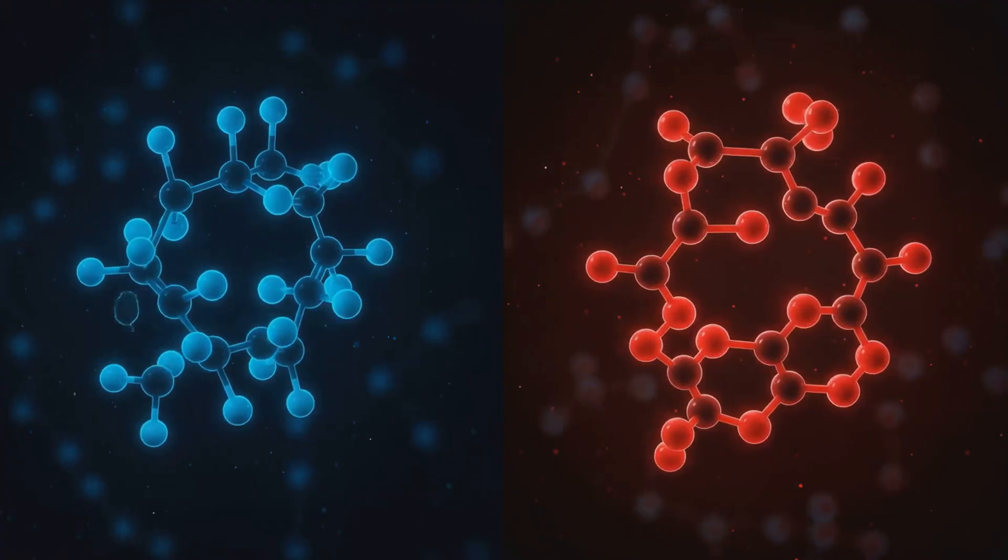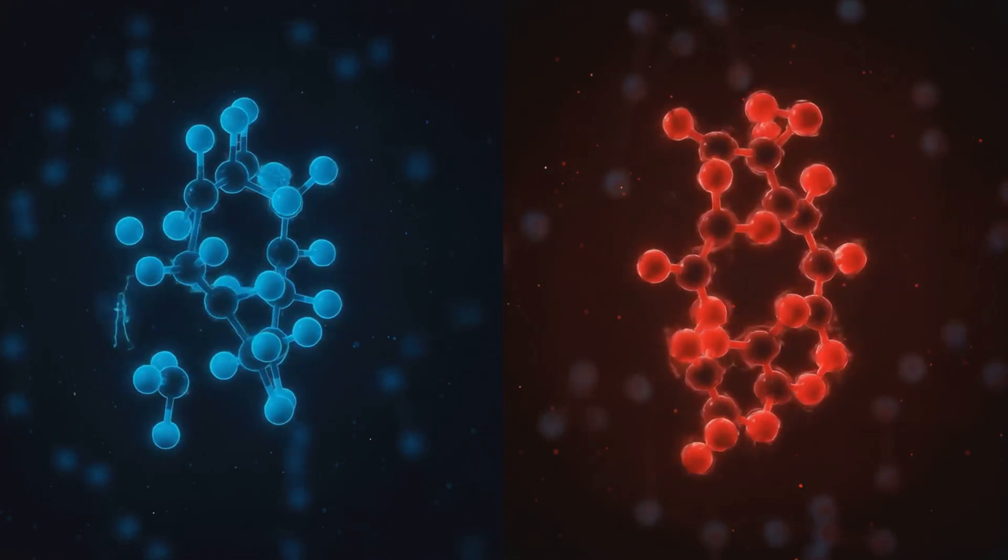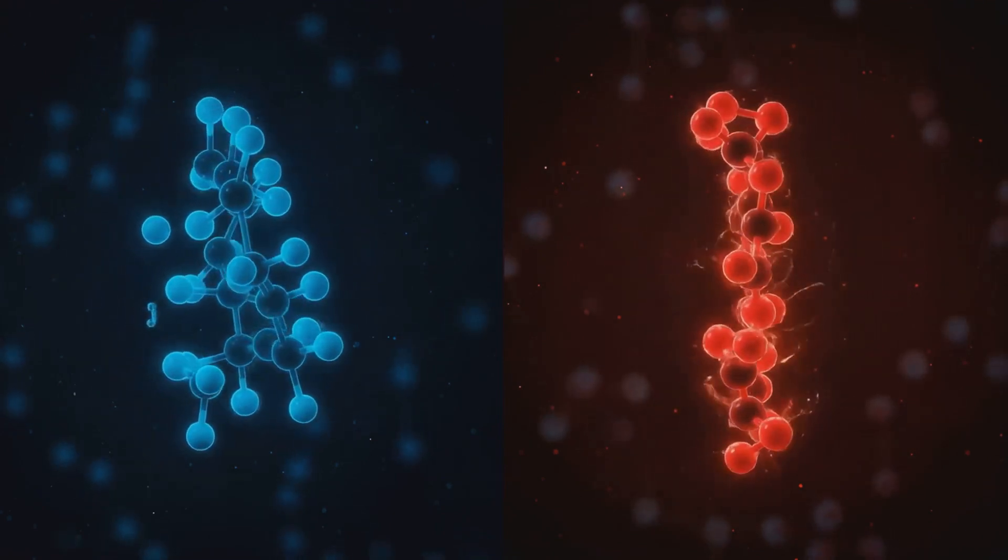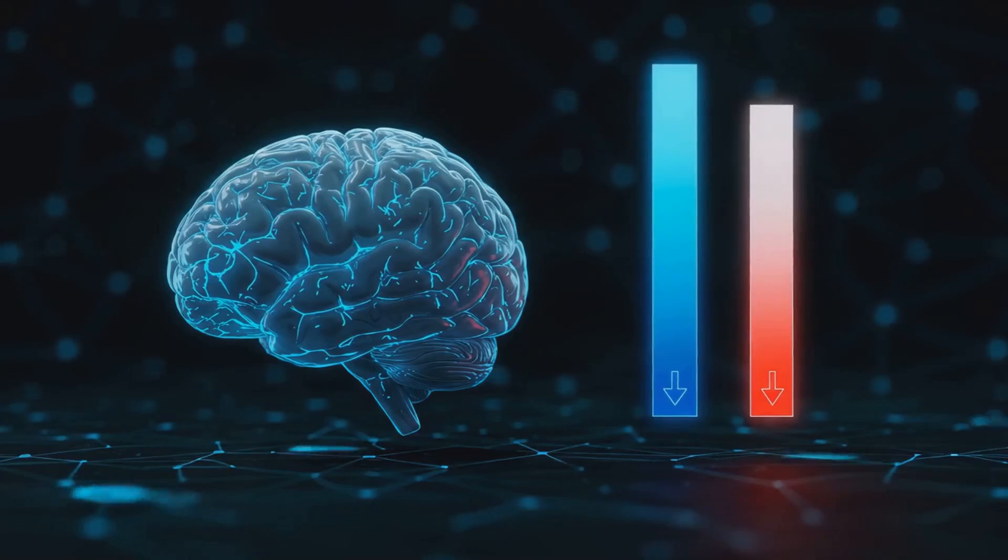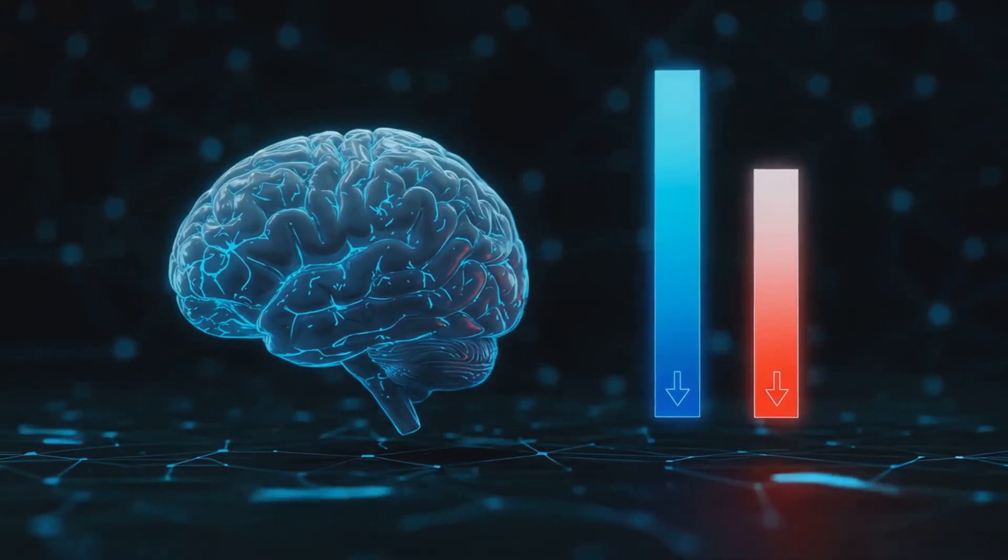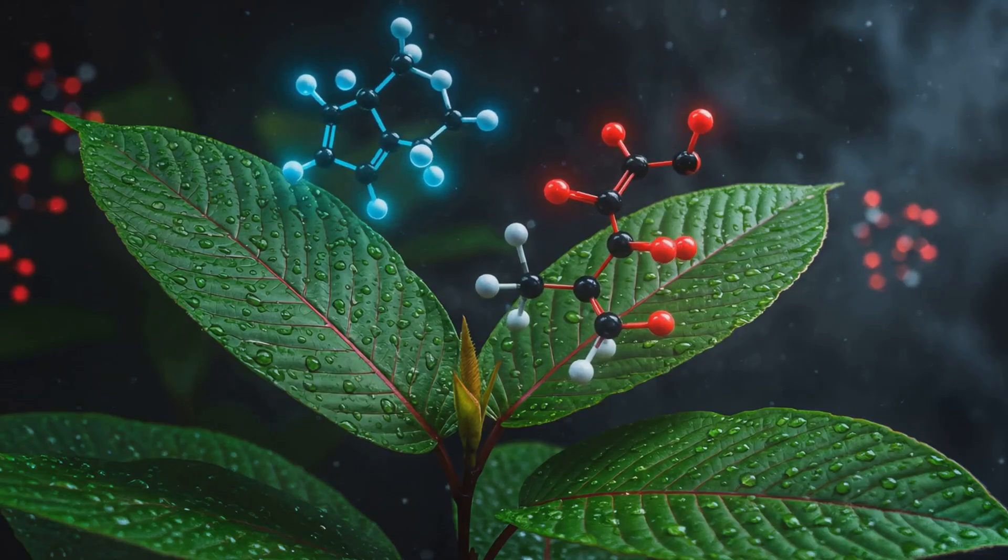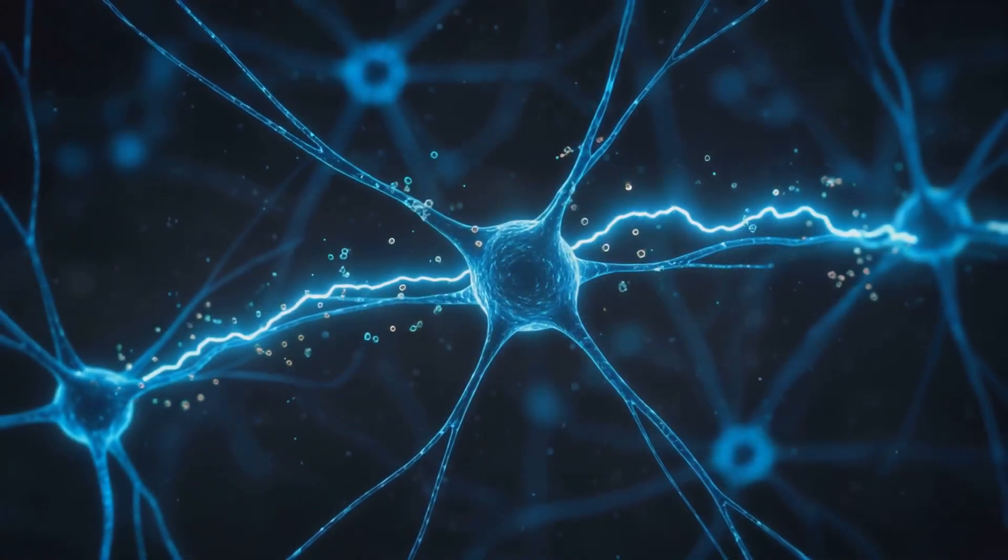Now, let's pit 7-hydroxymitrogenine against a more familiar player, morphine. Unlike our kratom-derived compound, morphine actually decreases brain reward thresholds at medium doses. It's like morphine is your brain's cheat code, making rewards easier to unlock.